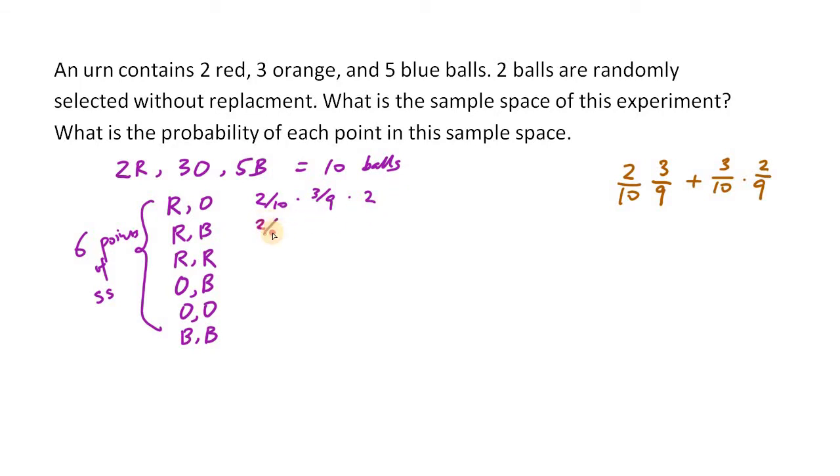So similarly, for red and then blue, you'll be choosing 2 from 10 balls, and then choosing 5 from 9 balls. And since there are different balls, there are two ways of getting this outcome, similar as the previous case. But to get two red balls, it will be 2 out of 10 times 1 out of 9. In this case, even if we swap the first ball and the second ball, it's still considered the same outcome. So we don't actually multiply it by 2.